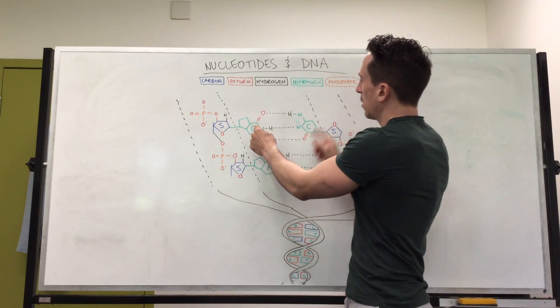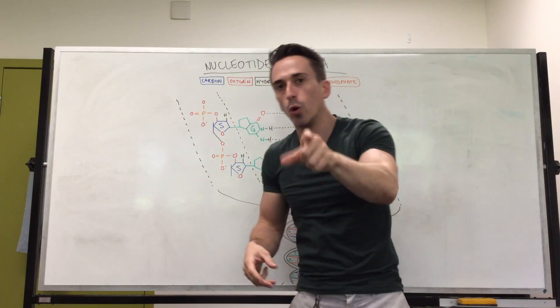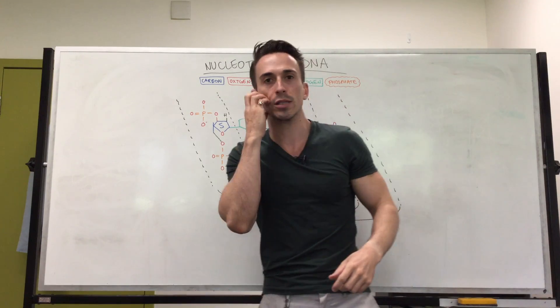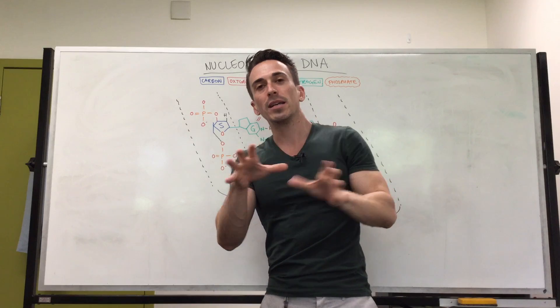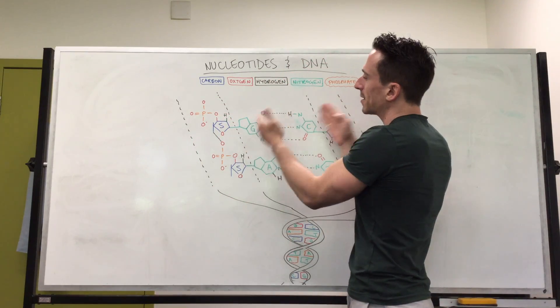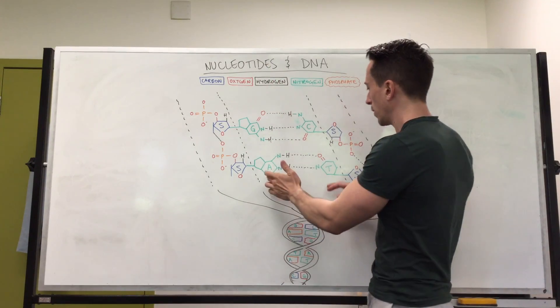The G's binding to the C's will always be three hydrogen bonds, always. An A talking to a T will always be two hydrogen bonds. Now this may not be of too much clinical relevance clinically but it is when we do scientific research because it means it's harder to break the bonds between a G and a C and it's easier to break the bonds between an A and a T.